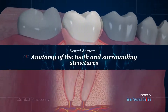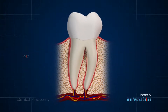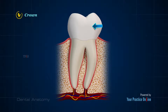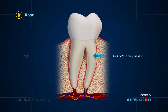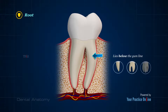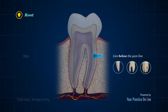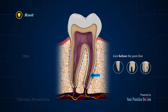Anatomy of the Tooth and Surrounding Structures: The Crown is the part of the tooth that lies above the gum line and is visible in the oral cavity. The Root is the part of the tooth that lies below the gum line and is embedded in bone. Depending on the tooth, there may be one to three roots. The tip of each root has an opening through which the tooth receives its blood and nerve supply.